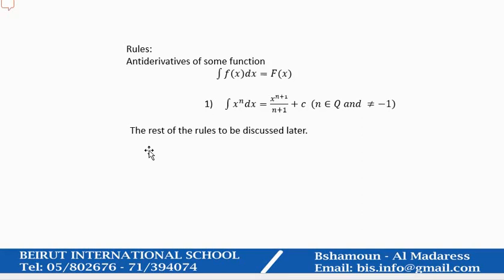There are certain rules we should know in order to find the integration. The first one is: we want to find the integration of a variable X to any power DX. You just add to the power of the variable 1, and you divide by the result. If the power is n, you add 1, it becomes n plus 1, then you divide by n plus 1. Don't forget the C. In this case, n shouldn't be minus 1.